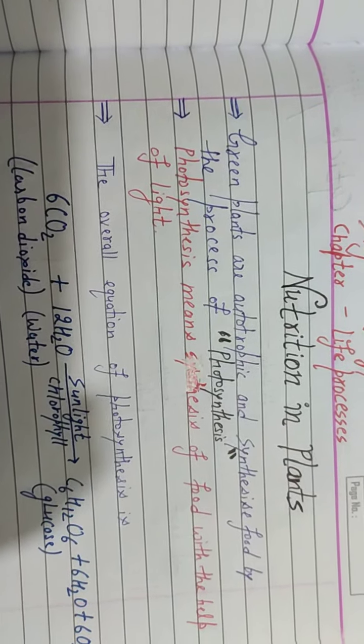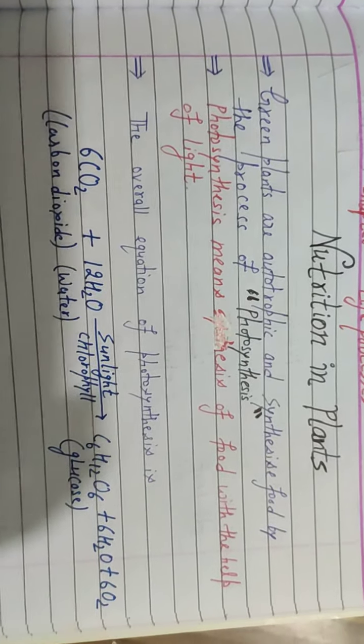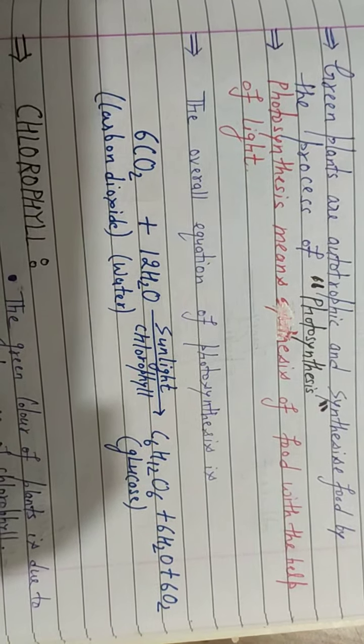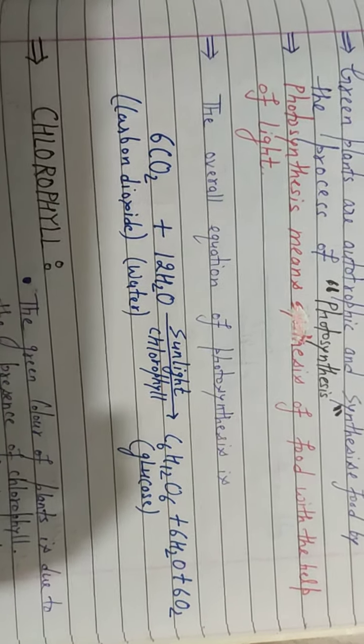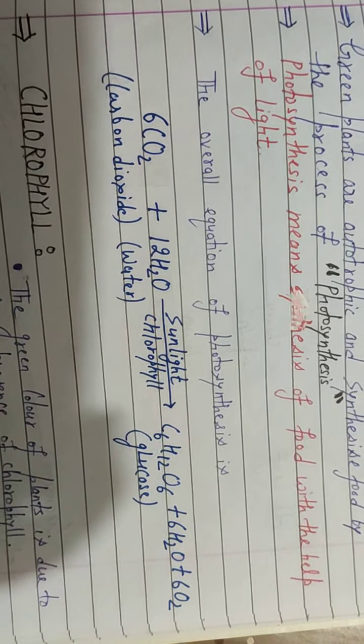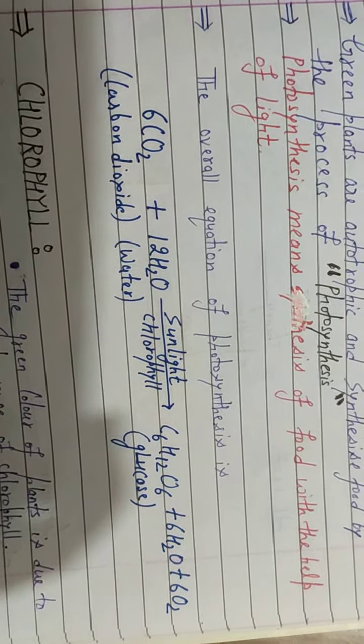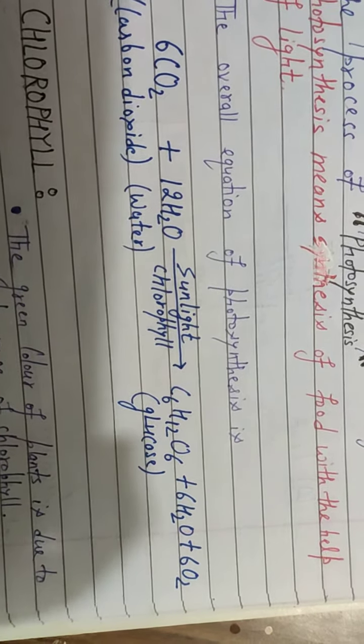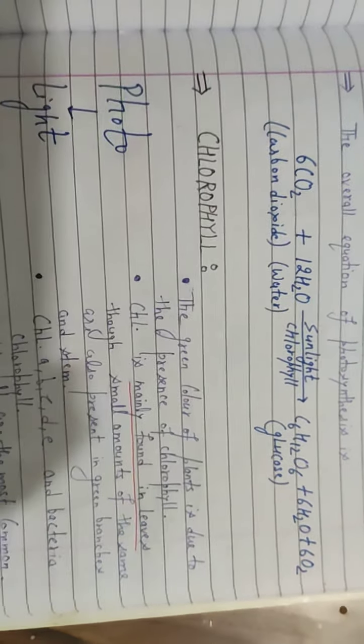The overall equation of photosynthesis is: six carbon dioxide molecules plus twelve water molecules in the presence of sunlight and chlorophyll form one molecule of glucose plus six water molecules plus six oxygen molecules.